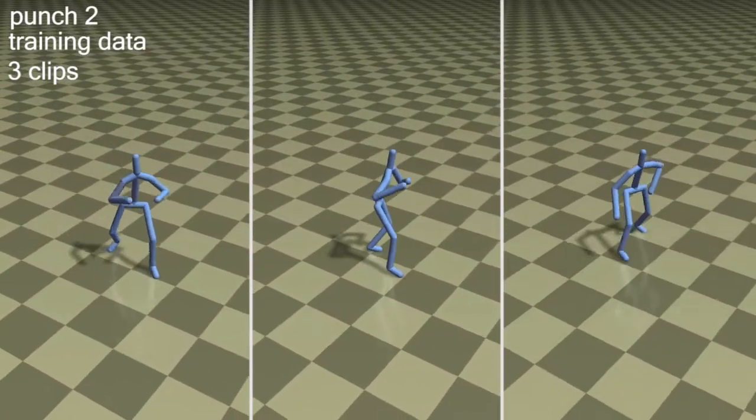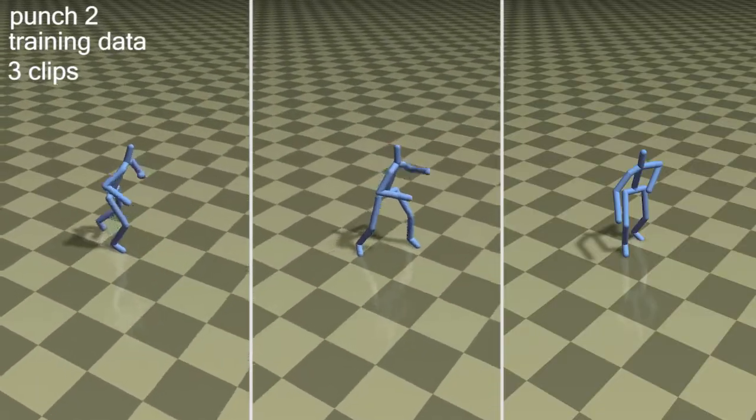By using different training motions, we can produce a punching controller with a different, more cautious punching style.